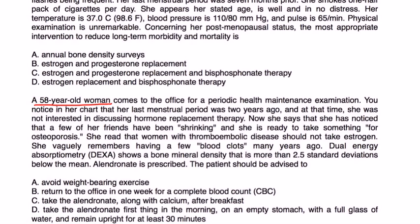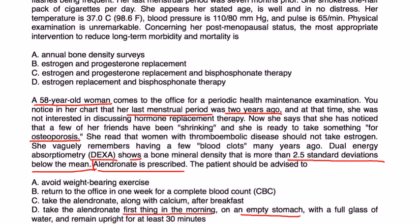A 58-year-old woman who had her last menstrual period two years ago was not previously interested in hormone replacement therapy. She is now ready to take something for osteoporosis and recalls having blood clots, so estrogen is contraindicated. Her DEXA scan shows bone mineral density more than 2.5 standard deviations below the mean. Alendronate is prescribed. The patient should be advised to take it first thing in the morning on an empty stomach with a full glass of water, and remain upright for 30 minutes.